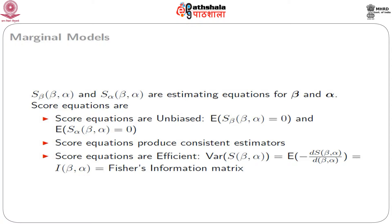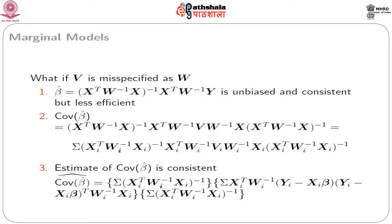The score equations are efficient because the variance gives the Fisher information matrix. This is the general idea of the marginal — that is, the general linear models. But the question is: what if V is misspecified? We still have β̂ = (XᵀW⁻¹X)⁻¹ XᵀW⁻¹y, where W is the working correlation matrix.